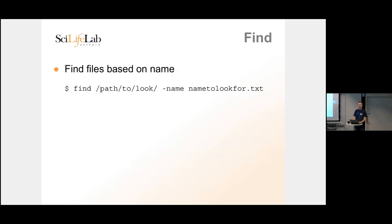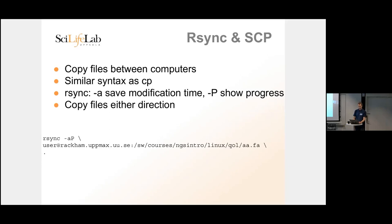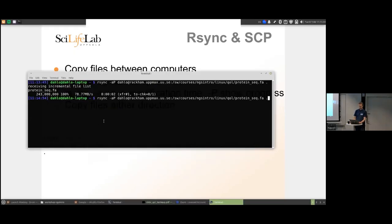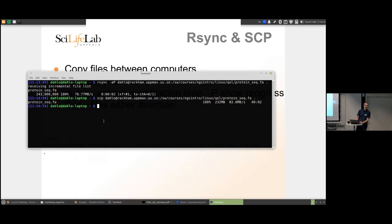If you want to use 'scp' instead of rsync, the syntax works almost the same way. You can use Ctrl+A to jump to the beginning and change 'rsync' to 'scp'. With scp you get a progress display by default without needing to specify extra options, but it otherwise works exactly the same way.